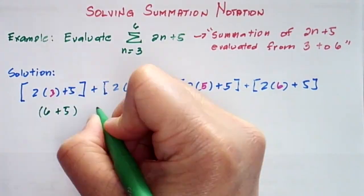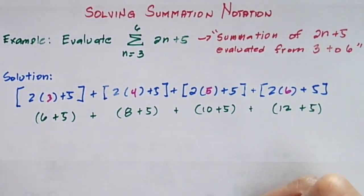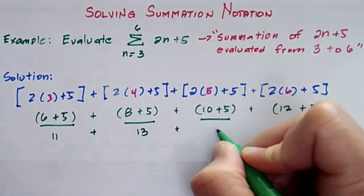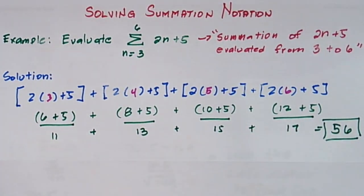We have 6 plus 5 plus 8 plus 5 plus 10 plus 5 plus 12 plus 5, which will be evaluated and added, and it's equal to 56.